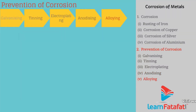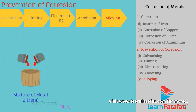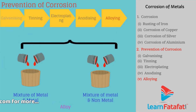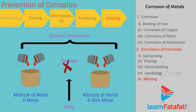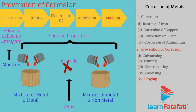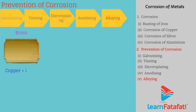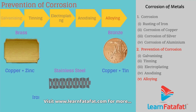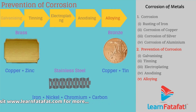Alloy: An alloy is a homogeneous mixture of two or more metals, or a metal and a non-metal, in a specific proportion. Alloys do not corrode easily. If one metal in the alloy is mercury, the alloy is called an amalgam. For example, brass is made of copper and zinc; bronze is made of copper and tin; and stainless steel is made of iron, nickel, chromium, and carbon.